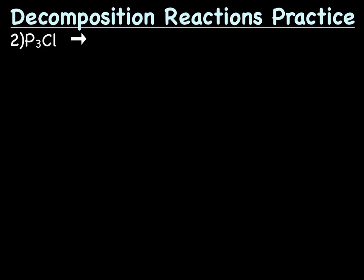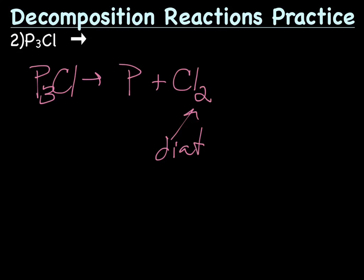All right. Why don't you try this one on your own, and then come back, hit play, try it. So, we've got P3Cl as a reactant. That's going to break apart into P and Cl2. Why Cl2? Because Cl is a diatomic. So, we've got to have the 2 there. P, not so much. Now, we're done. Well, no we're not. We've got to balance.